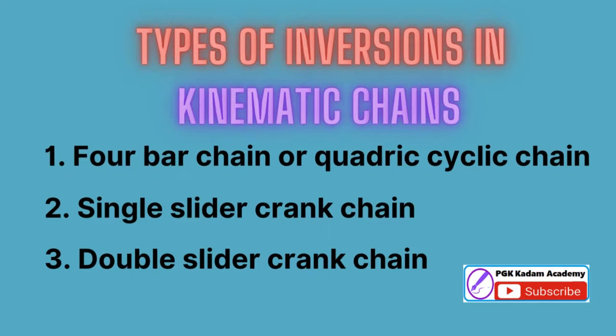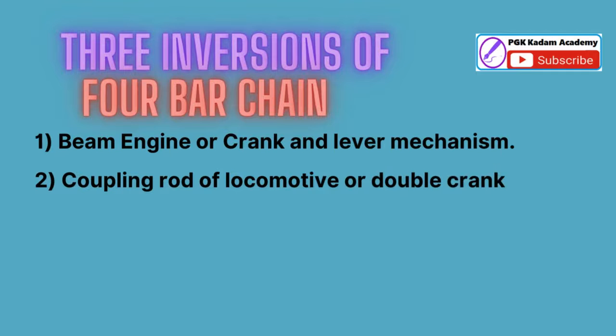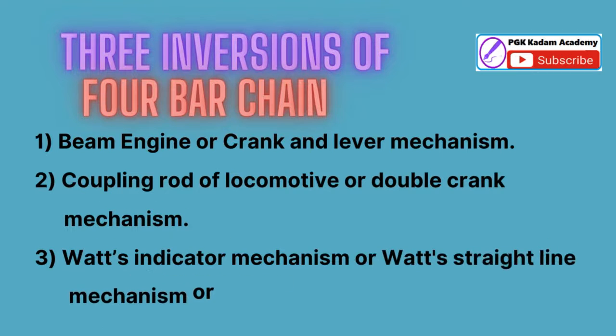Types of inversions in kinematic chains: 1. Four-bar chain or quadric cyclic chain, 2. Single slider crank chain, 3. Double slider crank chain. Though there are many inversions of the four-bar chain, yet the following are important from the subject point of view.